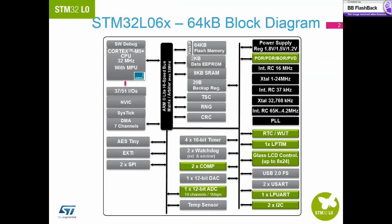If we look at the block diagram, we can see that the architecture can be broken down into three main categories: system or core peripherals at the top and to the left, standard peripherals common to most of the STM32 families, and low power peripherals highlighted in green, unique to the STM32L0.